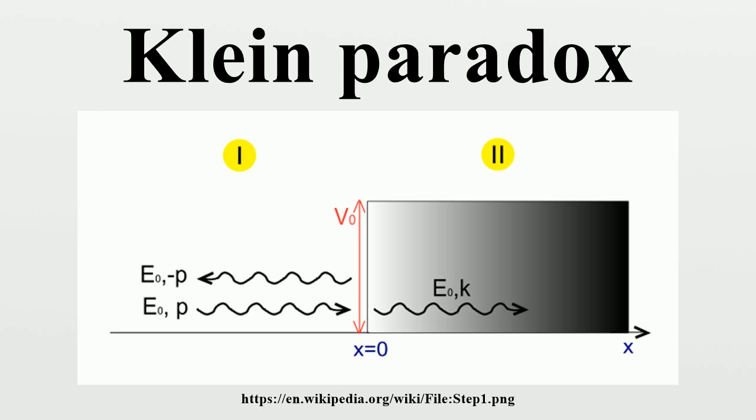In non-relativistic quantum mechanics, electron tunneling into a barrier is observed with exponential damping. However, Klein's results showed that if the potential is of the order of the electron mass, the barrier is nearly transparent.